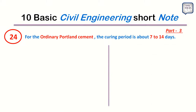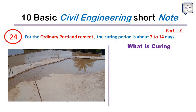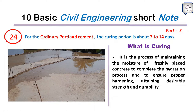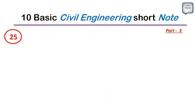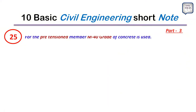A minimum 15 to 20 centimeter clear space from the ground should be maintained. Point 24: For ordinary Portland cement, the curing period is 7 to 14 days. Curing is the process of maintaining moisture in freshly placed concrete to complete the hydration process and ensure proper hardening, attaining desirable strength and durability.